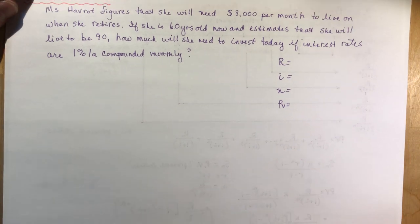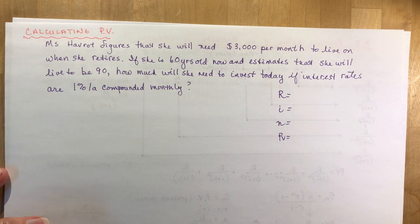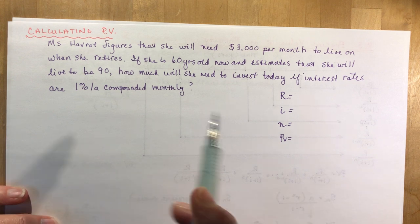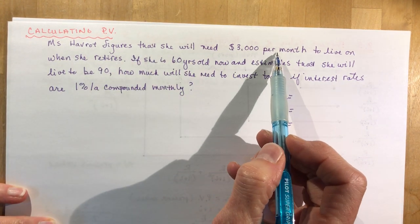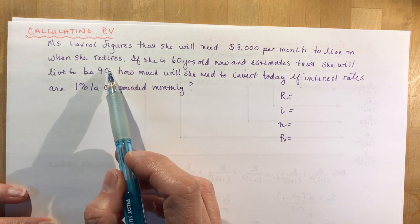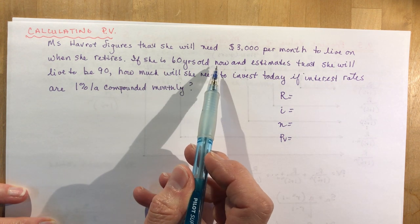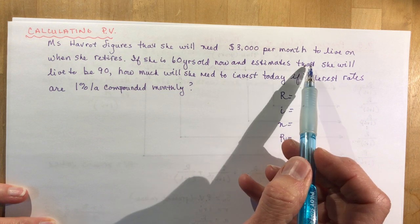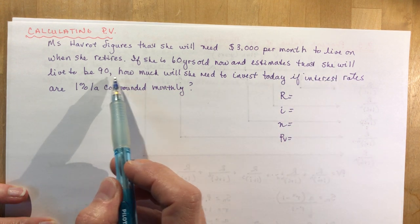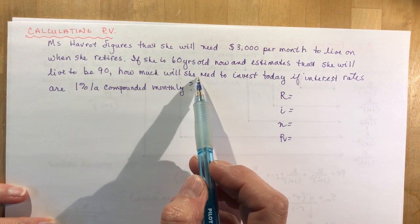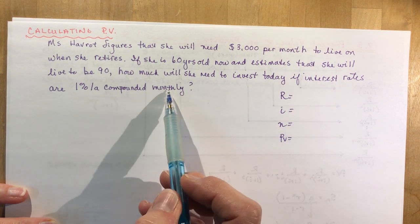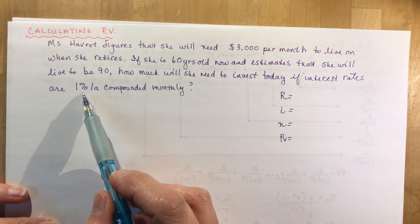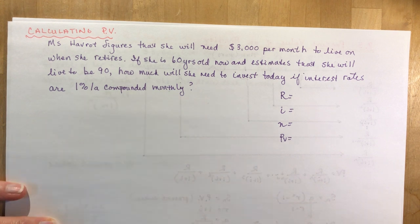Let's do some calculations so you know how to work with this equation. The first one, we're calculating the present value. Ms. Havra, that's me, figures that she will need $3,000 per month to live on when she retires. If she is 60 years old now and estimates she will live to be 90, how much will she need to invest today if interest rates are 1% per annum compounded monthly? That's probably a realistic rate of interest in today's market, as pathetic as it is.